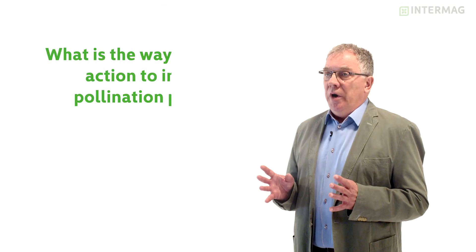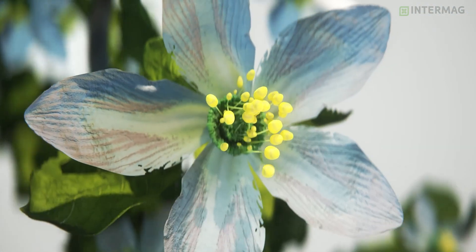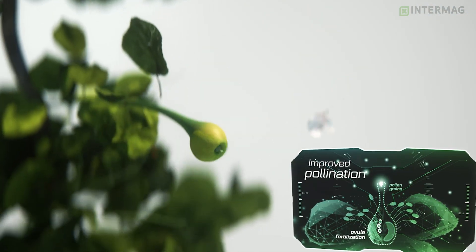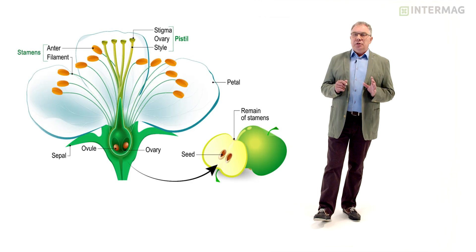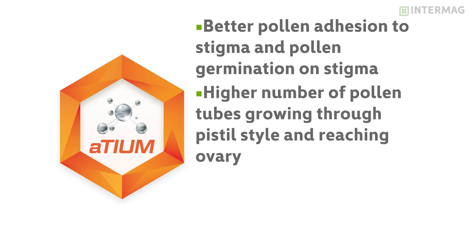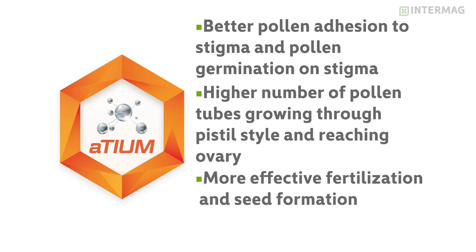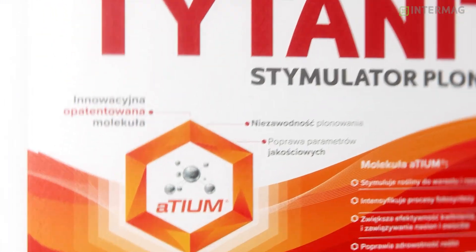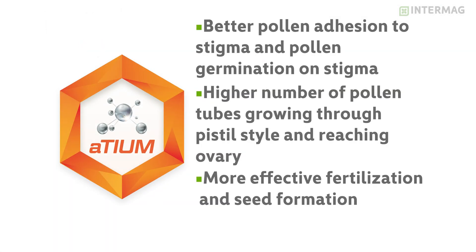Let's see the mode of action of Titanite to improve the pollination process. We can highlight four different steps of that action. The first is better pollen adhesion to the stigma and pollen germination on the stigma. As a result, we obtain a higher number of pollen tubes growing through the pistil down to the ovary. The third step is more effective fertilization and seed formation — we have more seeds inside the ovary, which is already a very good effect for yield. And finally, for fruit crops, we have better fruit development.